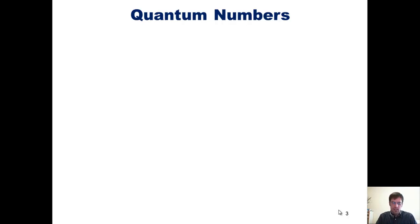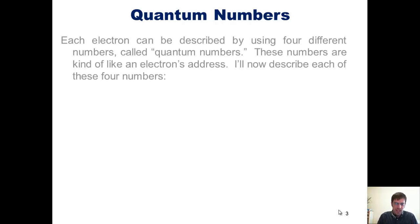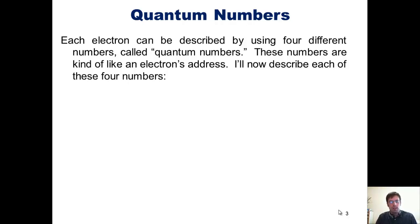Rest assured that there is just such a system. It's called the system of quantum numbers. So, each electron can be described by using four different numbers called quantum numbers. These numbers are kind of like an electron's address. I'll now describe each of these four numbers.